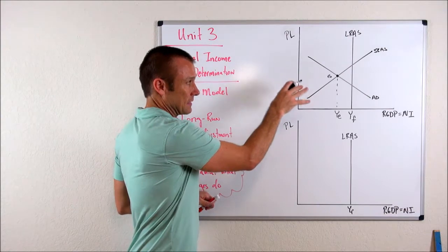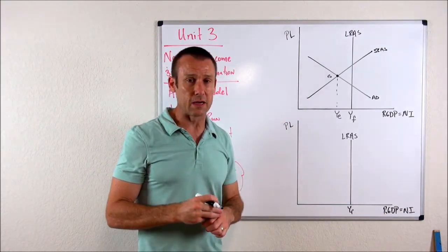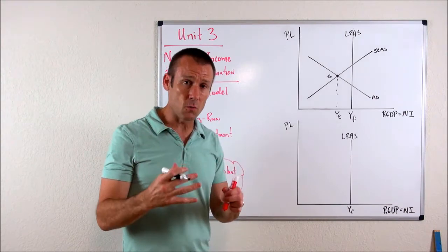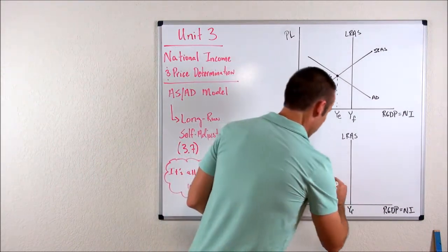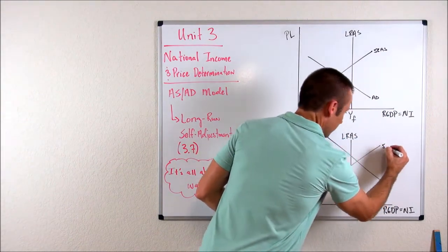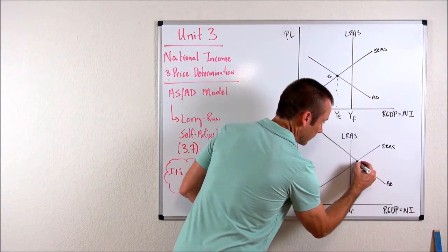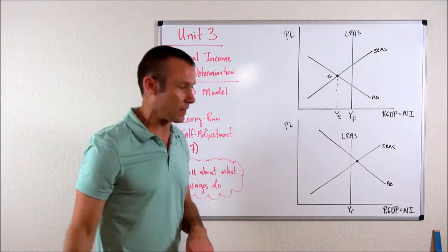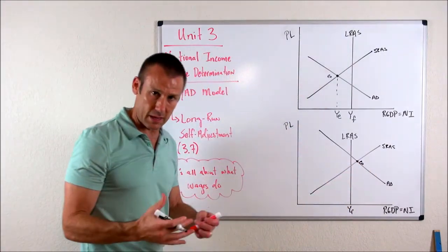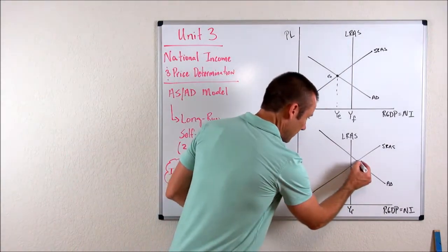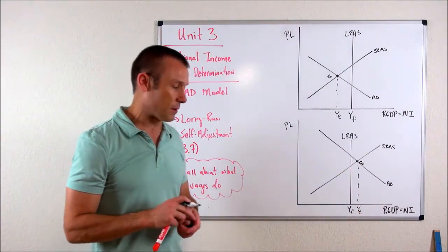Now I want to show you an economy that's really booming, and it's booming so much that it is actually producing more than the full employment level of output. So I'm going to draw an intersection of the SRAS and my AD curve to the right of the LRAS. I'll put it in equilibrium because, once again, that intersection point is in equilibrium. We are producing more than the full employment level of output.